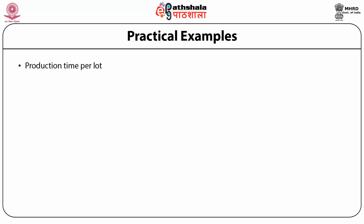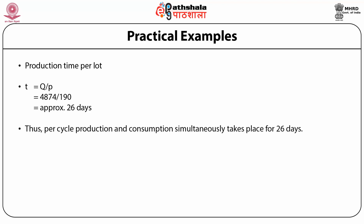Production time per lot: T = Q/P = 4874/190 ≈ 26 days. Thus, per cycle, production and consumption simultaneously take place over 26 days.